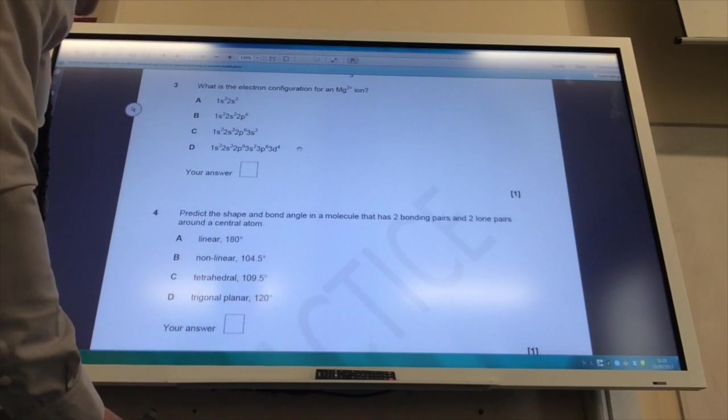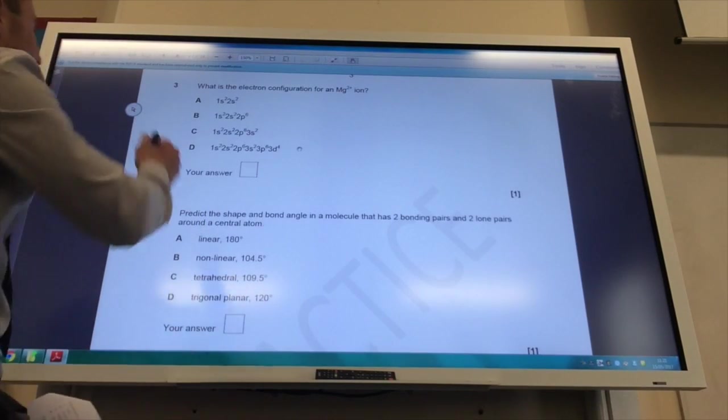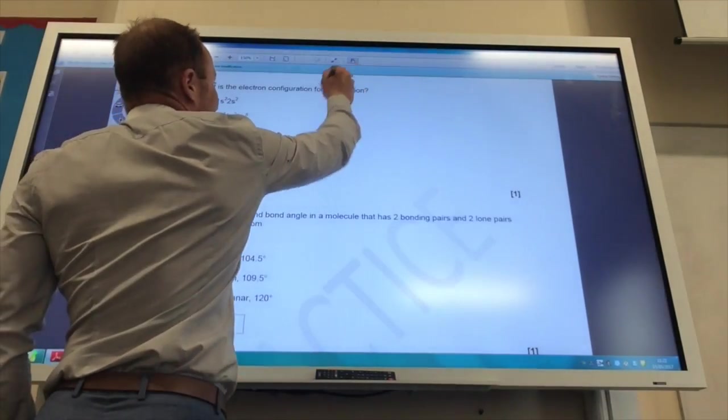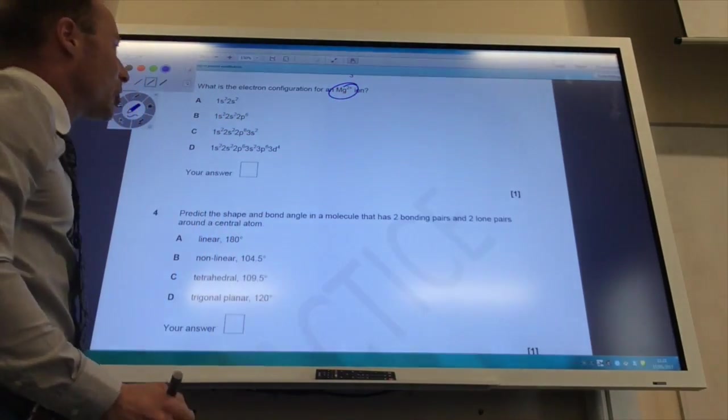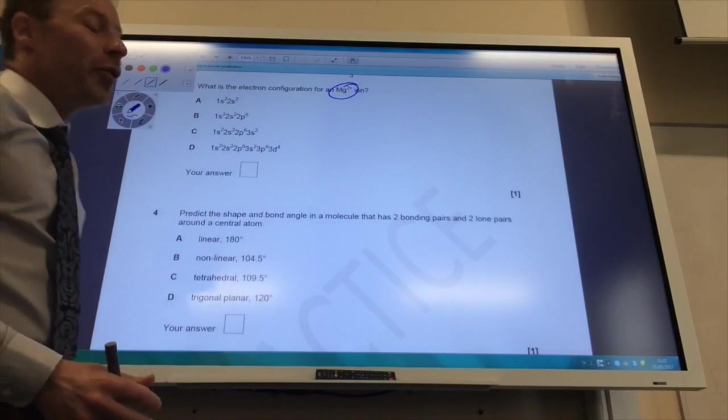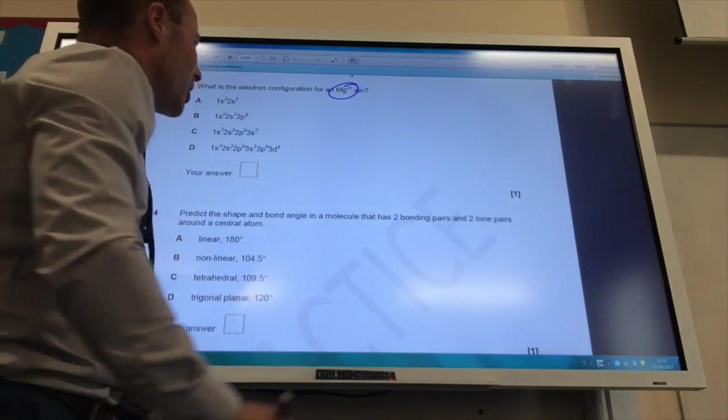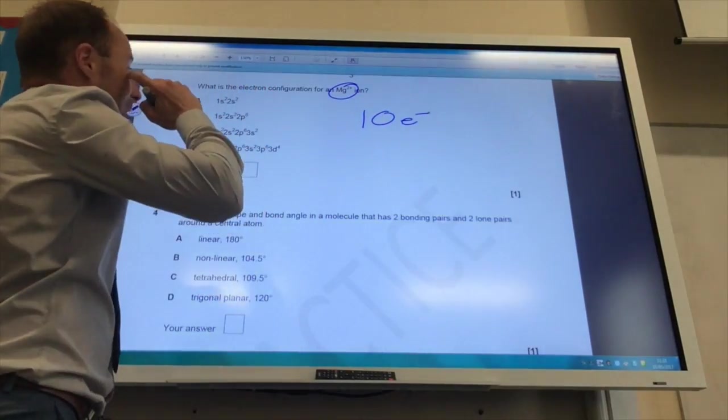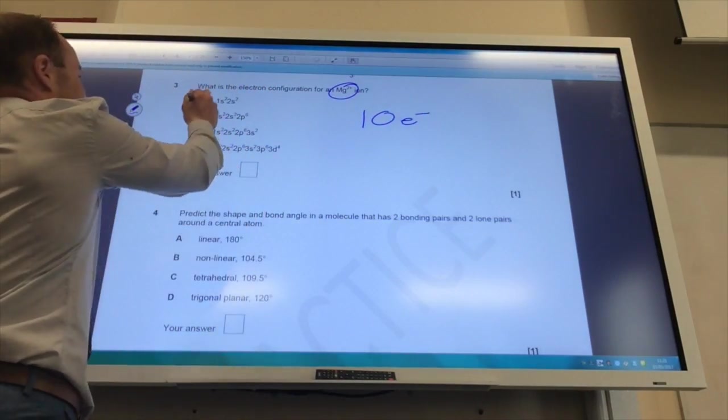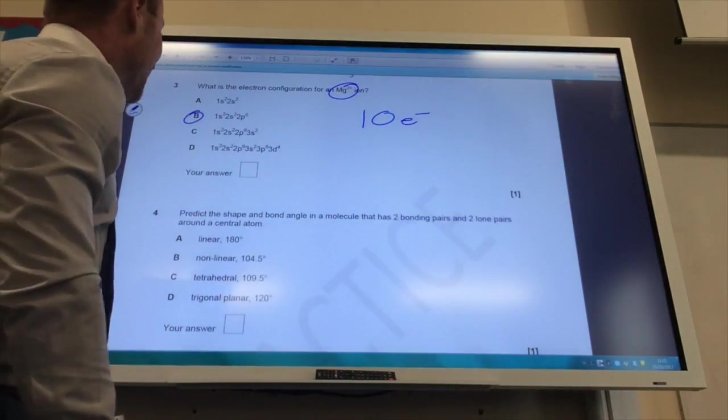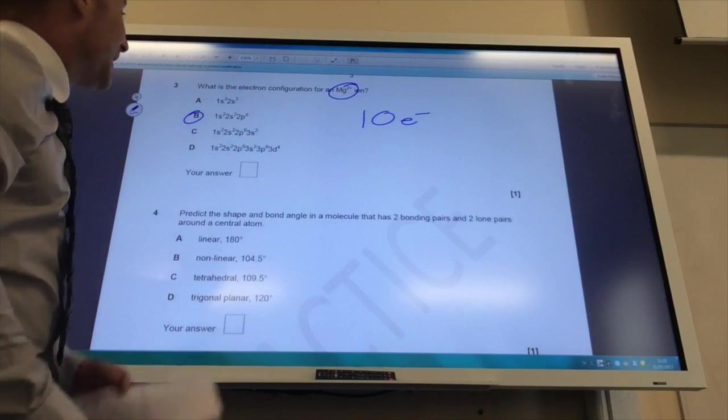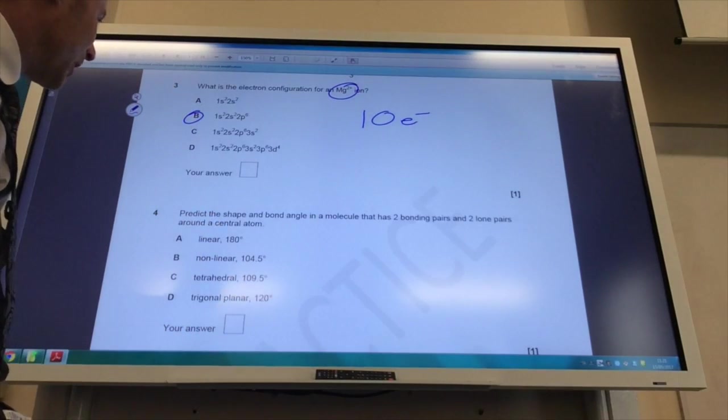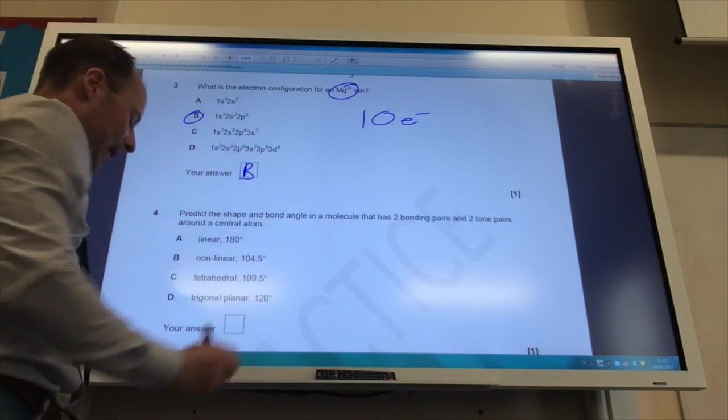Moving on to the next part, what is the electron configuration of an Mg2+ ion? Remember, if it's Mg2+, it has lost two electrons. The atomic number of magnesium is 12, so it has got 10 electrons that I'm looking for. So the answer is going to be B, because you've got your 10 electrons there. It's lost those outer electrons in the 3S subshell.